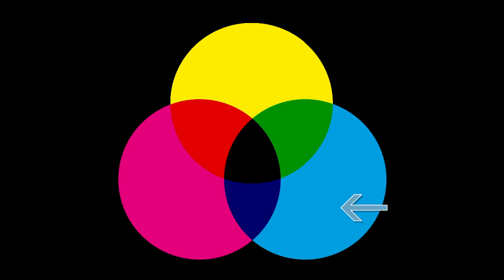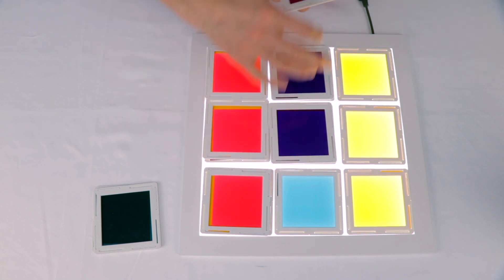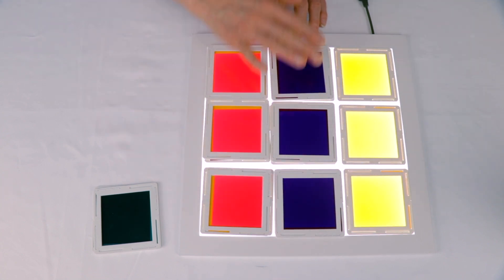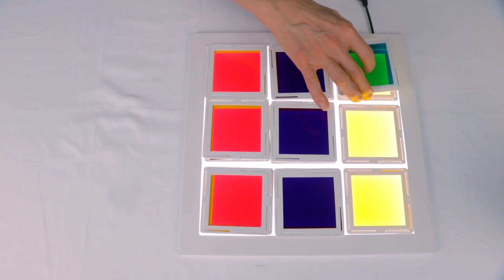Let's move on to the cyan column. The cyan filter is absorbing red color and allowing green and blue to pass through. So we would need to place a magenta on top because magenta allows red and blue to pass through. And when placed on top, it turns blue. Now for the last two yellow filters, we already know that cyan allows green and blue to pass through. But yellow filters absorb blue and allow red and green to pass through. So when we place the cyan on top, the color becomes green.